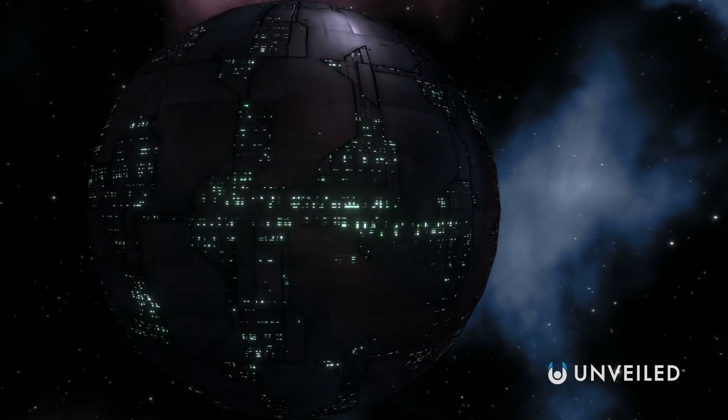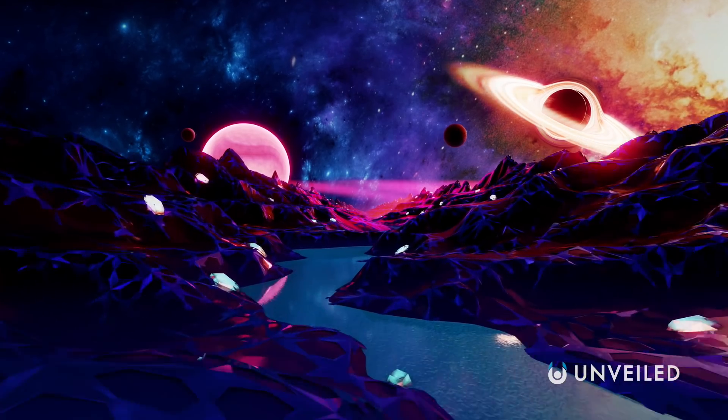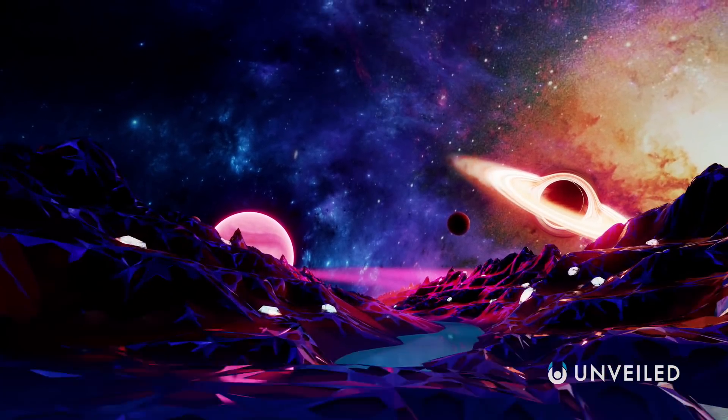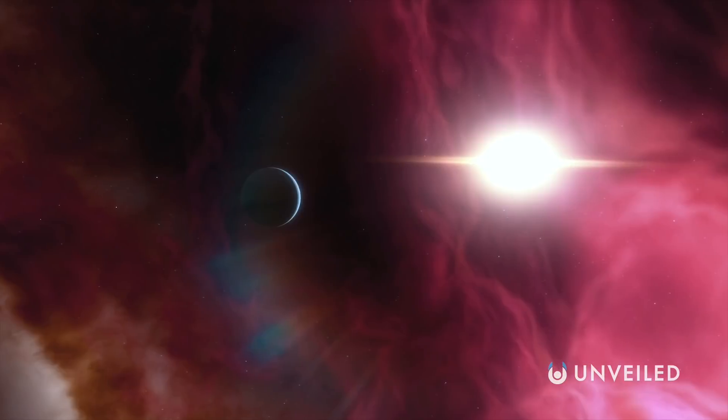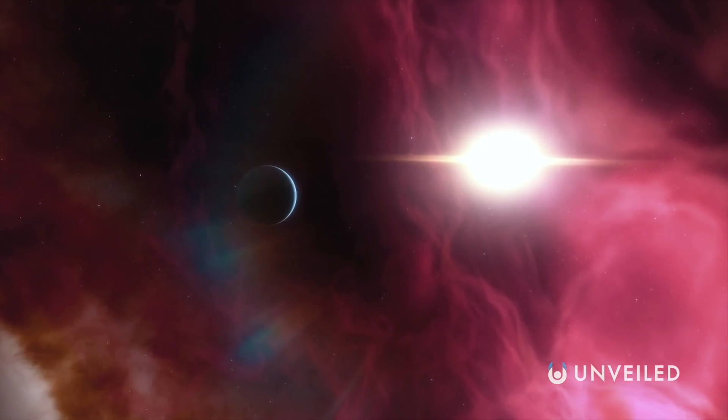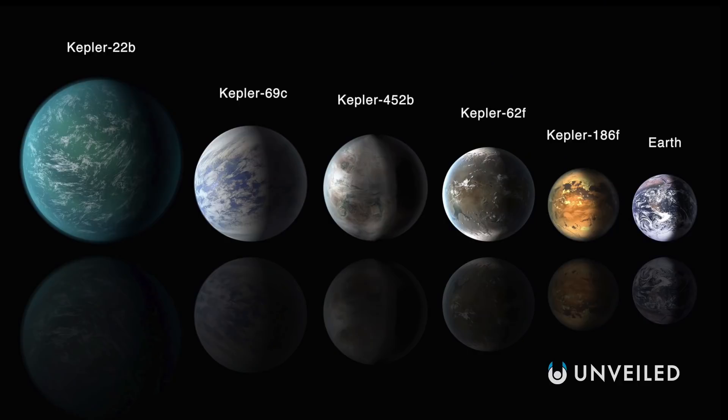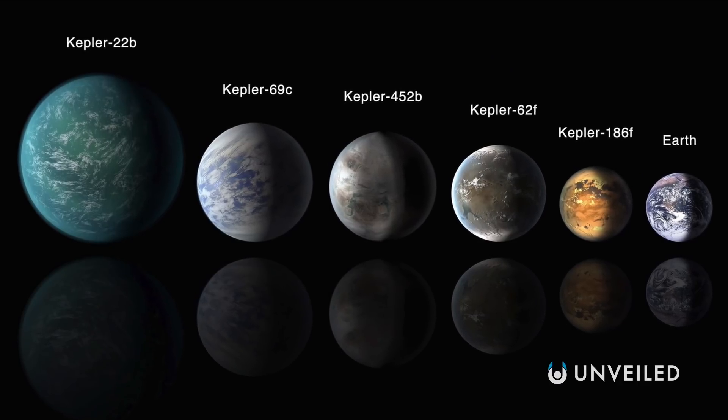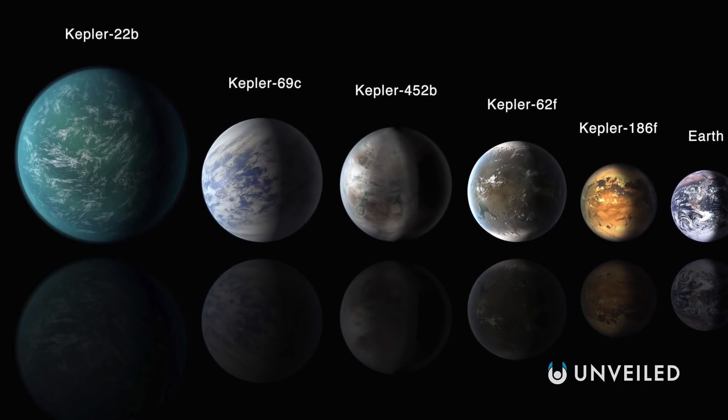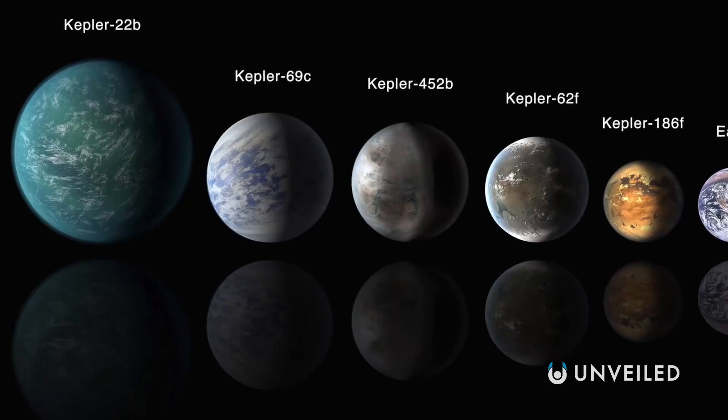So what are the chances that they're close by? Reason number two as to why we could be surrounded is the growing list of potentially Earth-like exoplanets. Exoplanets are planets outside of the solar system, and charting them is actually a relatively new prospect for astronomers, with the first official detection coming as late as 1992.